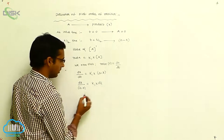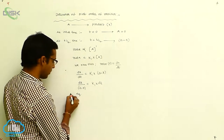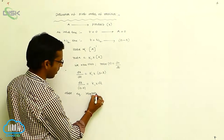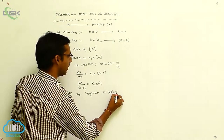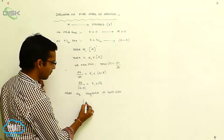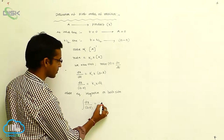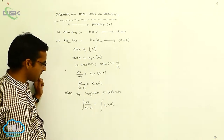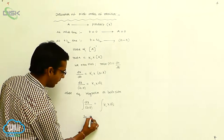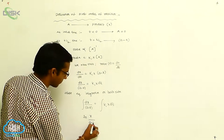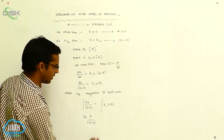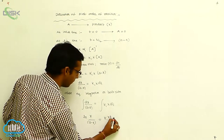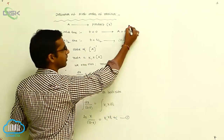Rearranging, DX by (A minus X) equals K1 into DT. Now, integrating both sides: the integration of DX by (A minus X) equals the integration of K1 DT. This gives ln(A minus X) equals K1 into T plus C. This is equation 1.